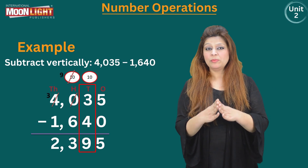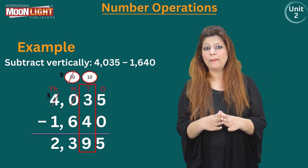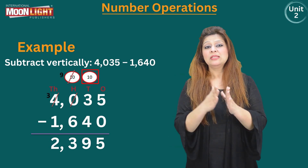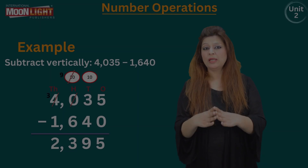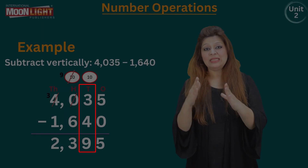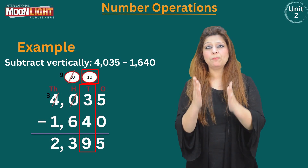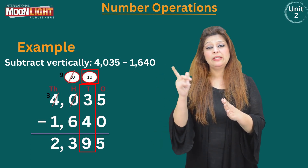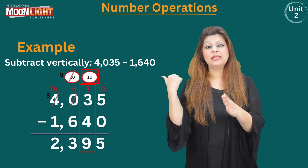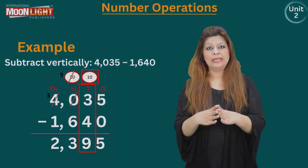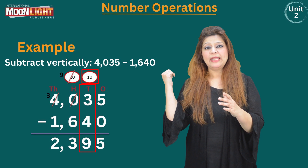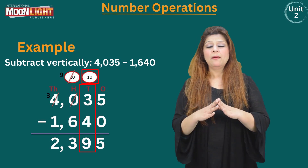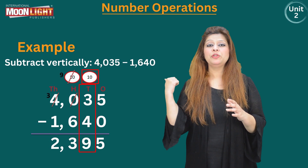We take a borrow from the thousands digit 4, cross it out and write 3 on top. The hundreds place 0 becomes 10, since it received a borrow from thousands. But we still need the borrow at the tens place, so we cross out 10 and write 9, as it gives one to the tens place. The tens place becomes 10 plus 3 equals 13. 13 minus 4 is 9, so we write 9.